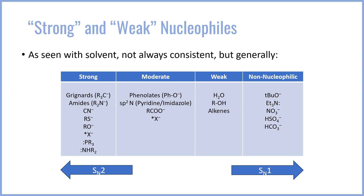Weak nucleophiles are typically water and alcohols — they have a lone pair, but it sits on a relatively electronegative oxygen without excess negative charge, and they must always wait for an SN1 process. Alkenes are also weak nucleophiles; the pi bond is somewhat nucleophilic and will participate in SN1 processes if a cation is available, enabling cyclizations within a carbon skeleton. Non-nucleophilic species include nitrate, bisulfate, and bicarbonate, which have a negative charge strongly delocalized through multiple oxygens. Additionally, tert-butoxide and triethylamine appear to be strong SN2 nucleophiles but are far too sterically hindered to act as such.